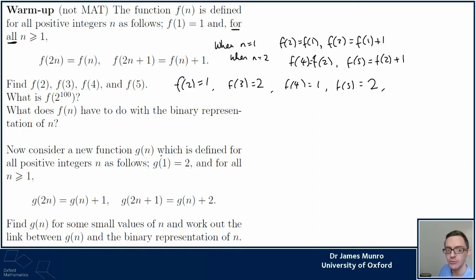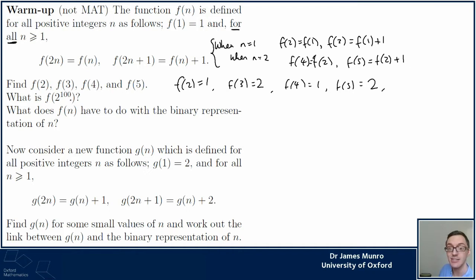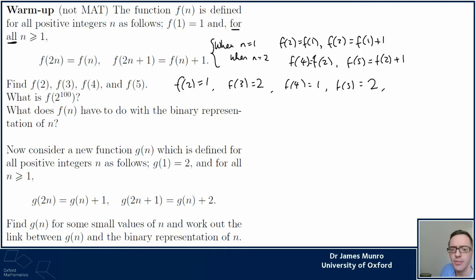There's another part asking me to work out f(2^100), and here I need to be a little more strategic. My first approach was to plug in small numbers; now I've got to decide what value of n to use. The rules tell me how f at some number like 2n relates to f at some value like n, so I want to think about using something like n equals 2 to the power of 99.